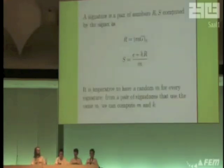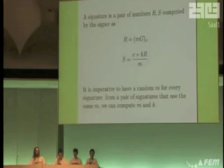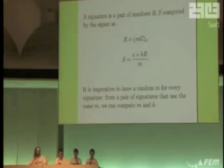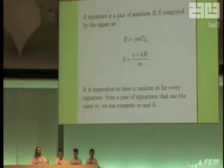How does someone who signs something calculate the numbers r and s, which make up the signature? Well, r is done by scalar multiplication of the base point of the elliptic curve — difficult stuff; that's the hard problem at the base of all elliptic curve cryptography. But s is calculated using normal arithmetic.